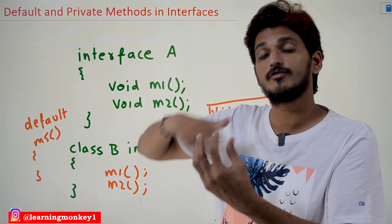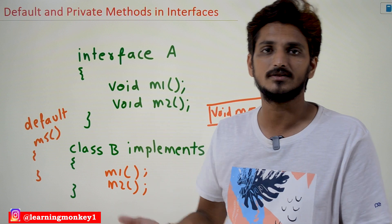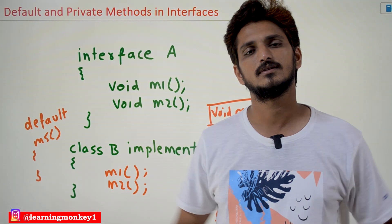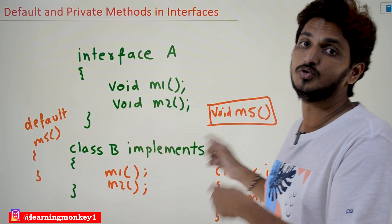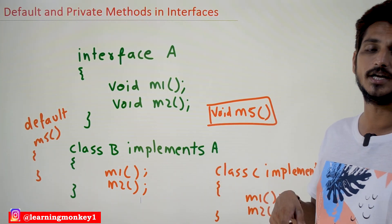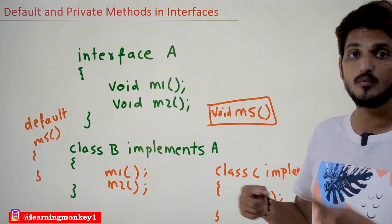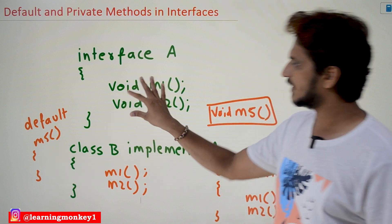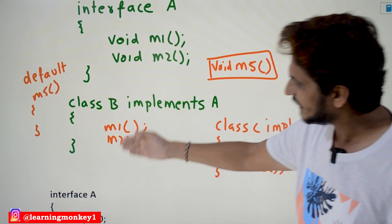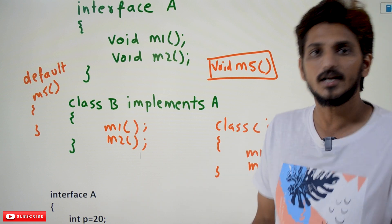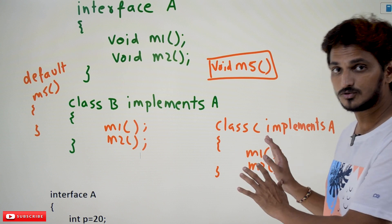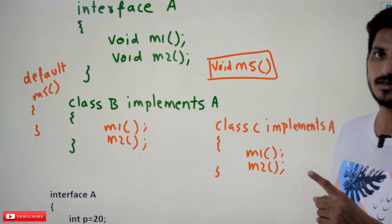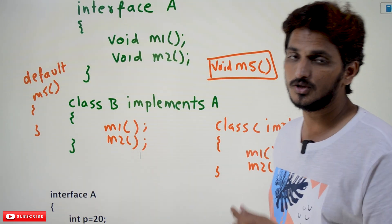The situation you need to understand: after some time, if you add another logic to the interface, go with the default methods. Because already this interface is used by so many classes. If you add extra logic, every class has to implement that logic — whether it is needed or not. In order to handle these type of situations, they implemented default methods. You write 'default M5' and define the body here. If class B wants to use M5, it will write its own logic — that is method overriding, and it is allowed. If class C doesn't need M5 method, it does not have to implement it, because it is a default method, not an abstract method. That's why default methods are used in interfaces.